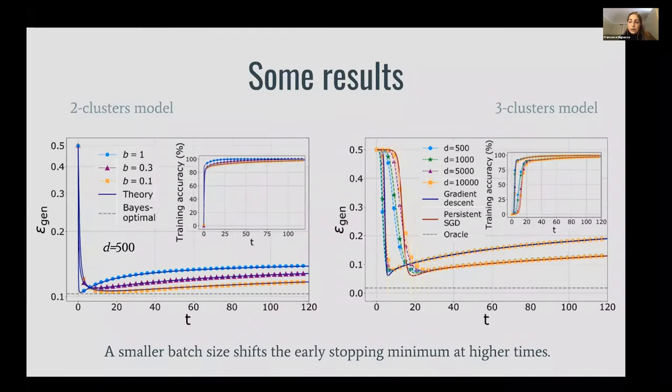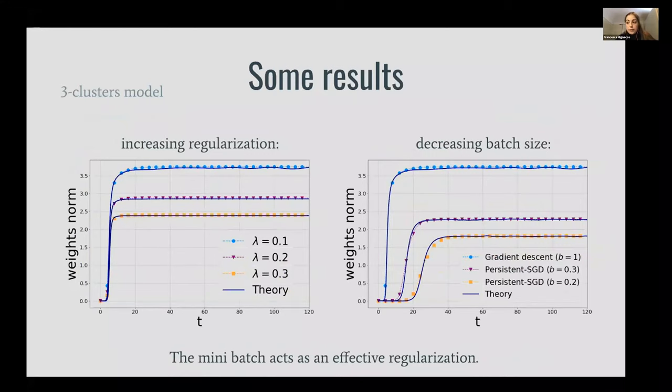Another thing that we observe is that the small batch size acts as an effective regularization. If we look at the weights norm as a function of time, we see that decreasing the batch size has a similar effect to increasing the strength of the ridge regularization.